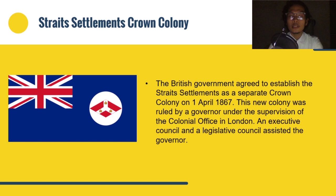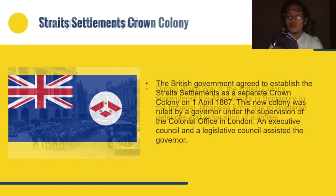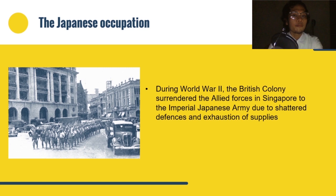More representatives for the local population were gradually included over the years, and the city itself received a facelift. Public buildings were constructed, a modernized police force was established, and institutions were set up that brought an end to some serious social problems. However, during World War II, the British colony surrendered the Allied forces in Singapore to the Imperial Japanese Army due to shattered defenses and shortages of supplies, leading Singaporeans to lose trust in the British.